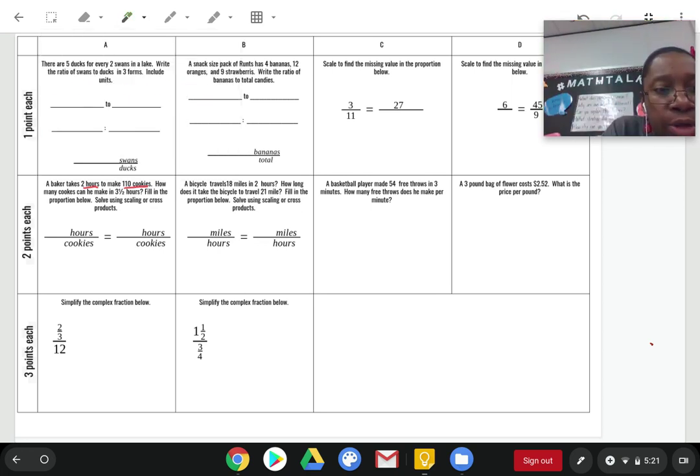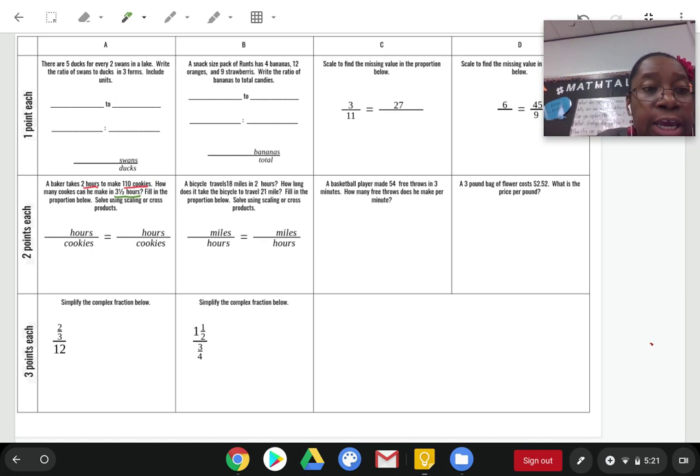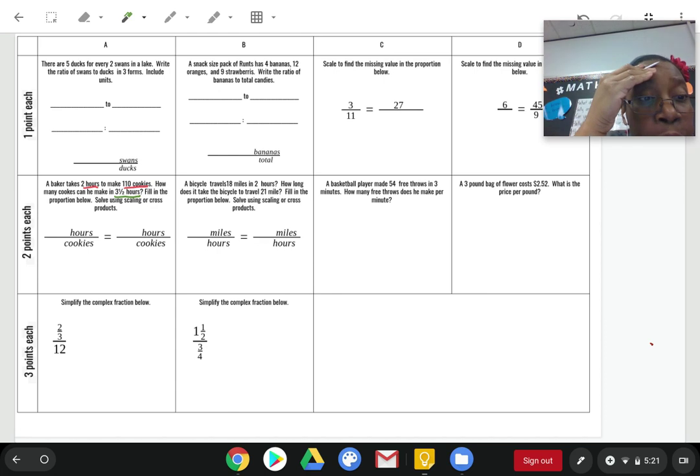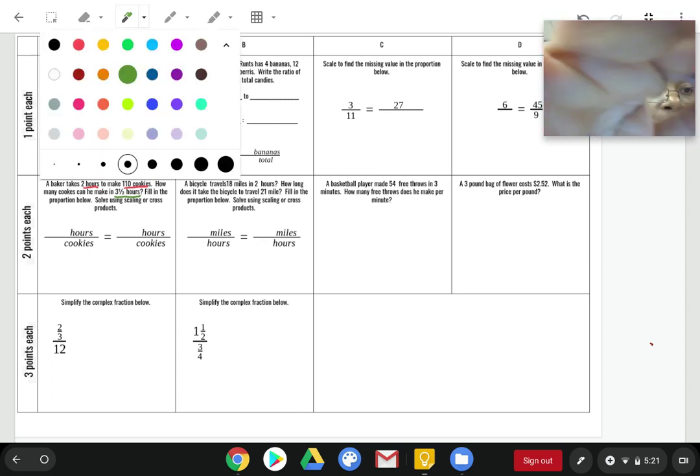It says that a baker takes two hours to make 110 cookies. How many cookies can he make in three and a half hours? Something that I really need you to see is that two hours and 110 cookies belong together. It goes hand-in-hand. So it says to fill in the proportion. A proportion is just when you have a fraction equal to another fraction.